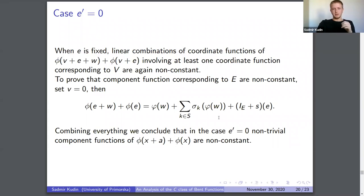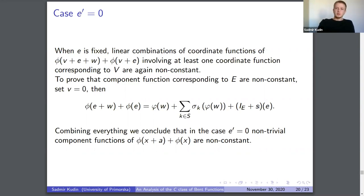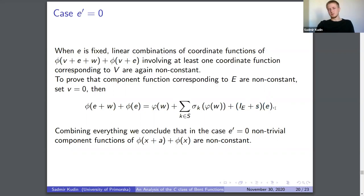Setting v = 0, we look at what the function reduces to for the component functions corresponding to E. Since s has no component functions with linear structure, identity plus s cannot produce any constant components — so the component functions corresponding to E are non-constant as well. This completes the case e' = 0: all component functions are non-constant, which is exactly what is needed.